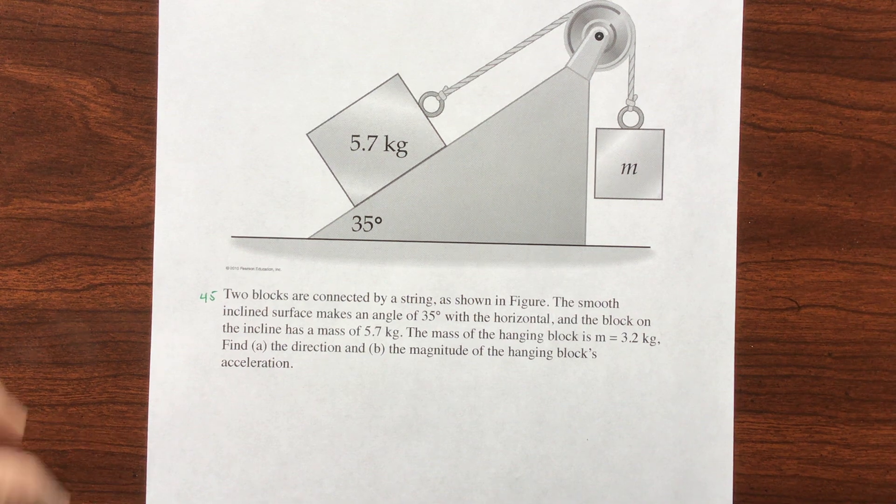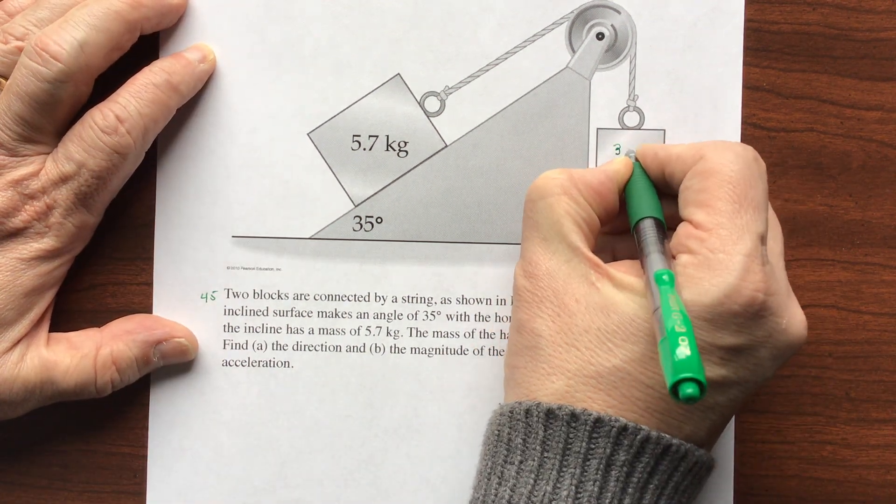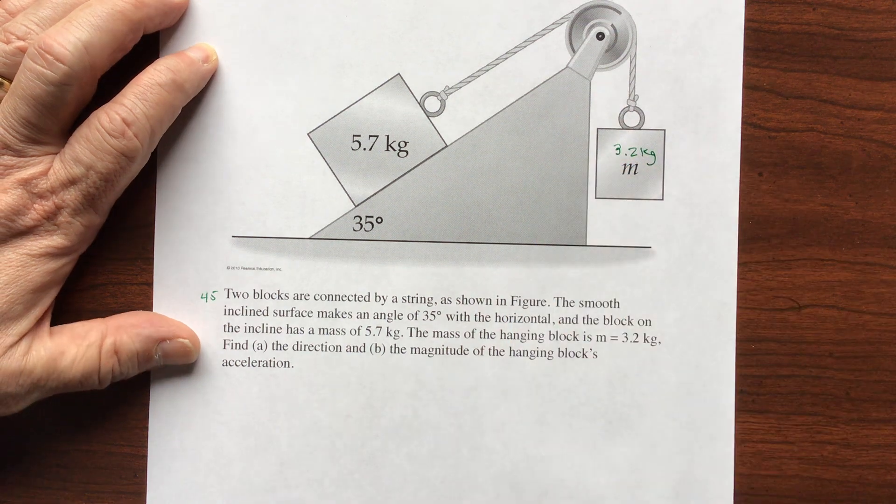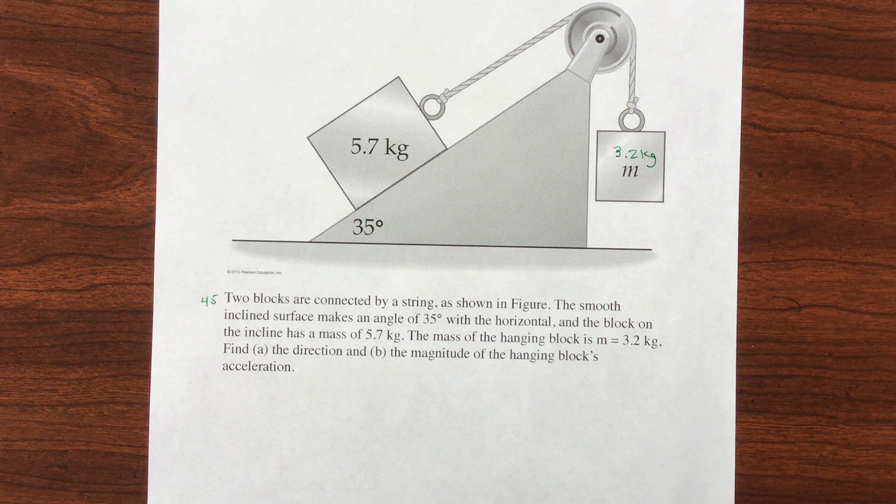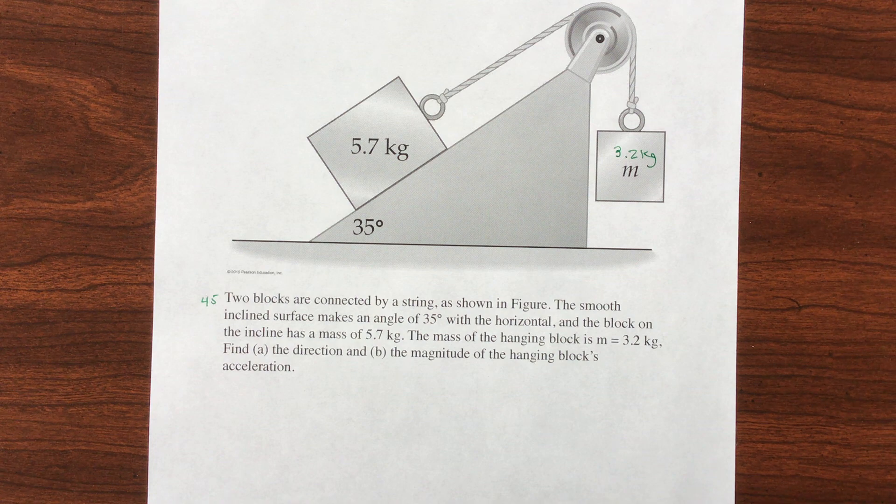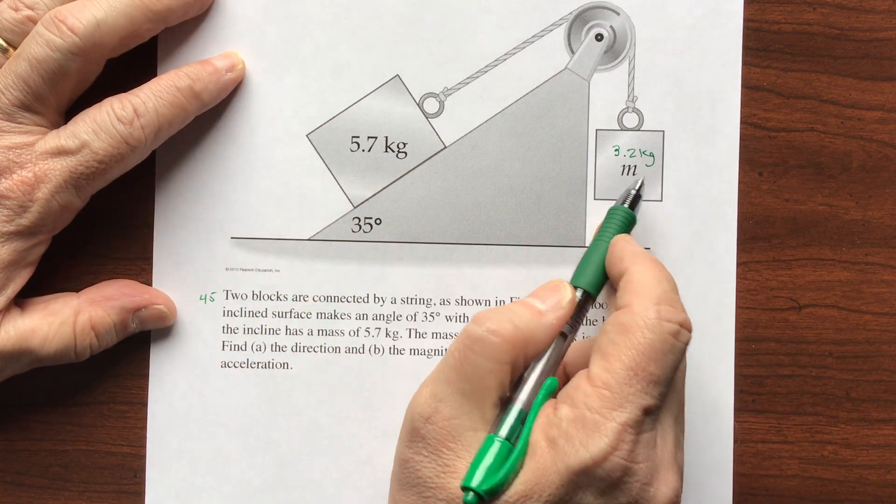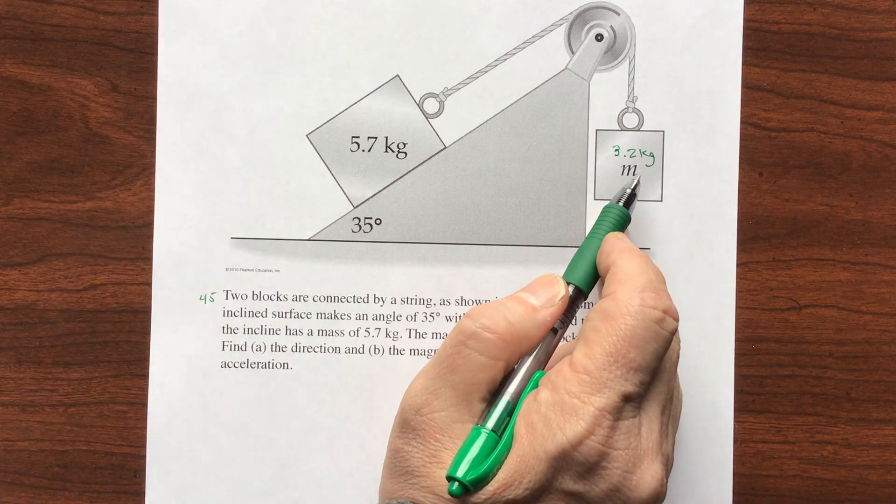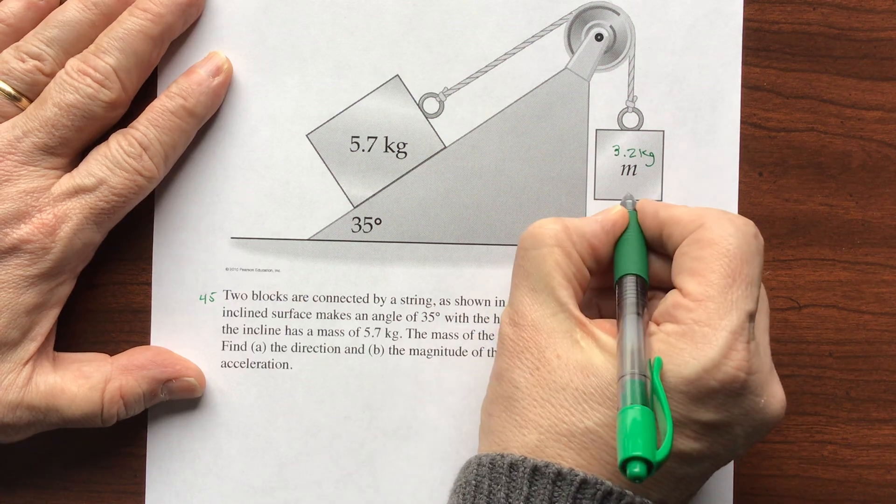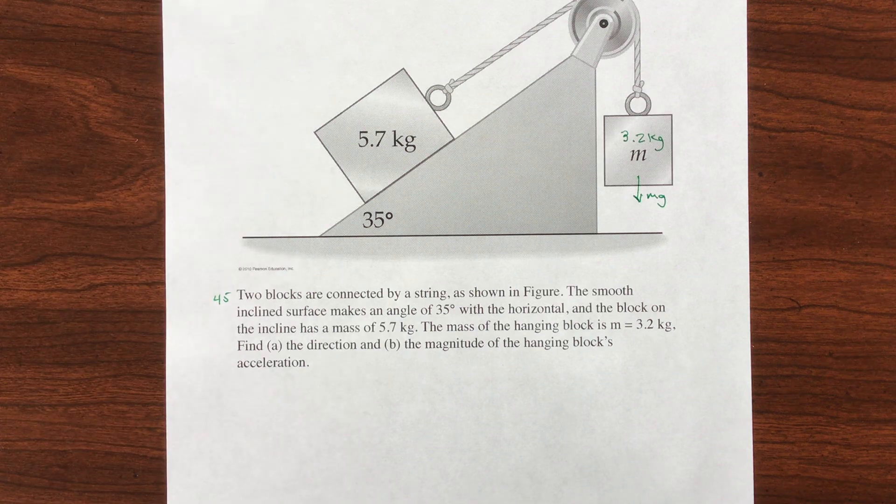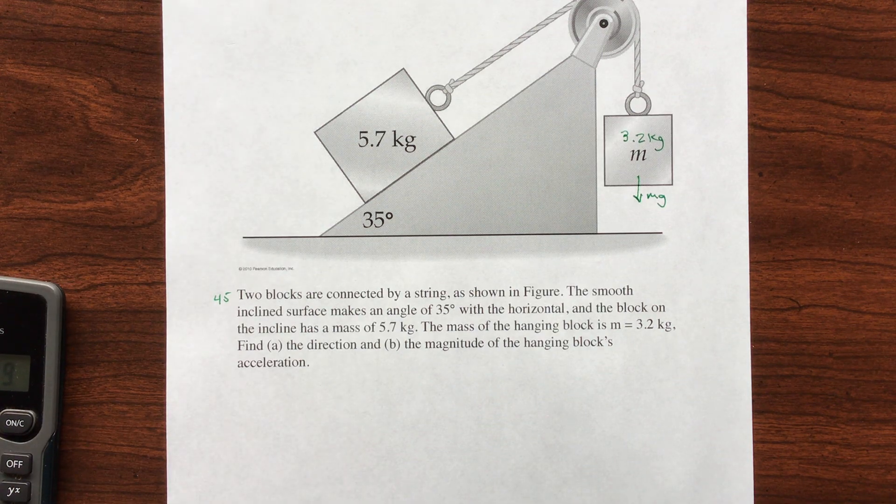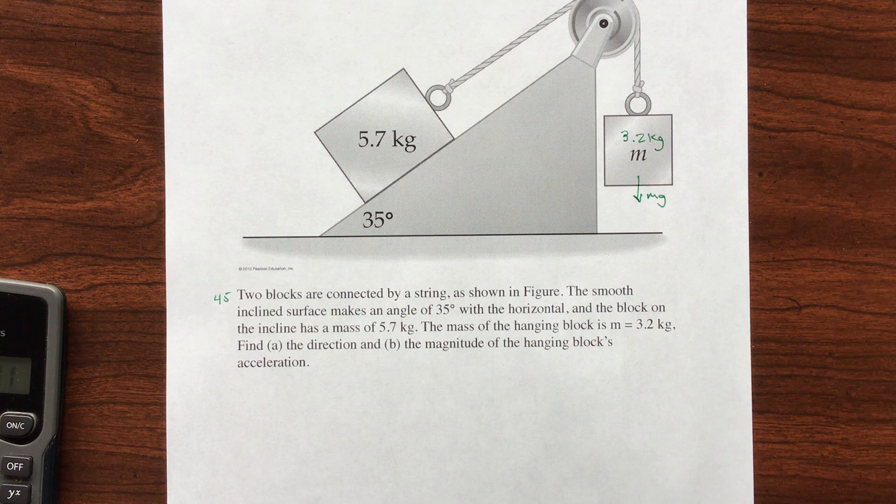So we know what m is, m is 3.2 kilograms. And then we want to know, is that block going up or down, and how fast is it accelerating? All right, so I need to find this. Let's find out what this mass times gravity is. So this is its weight going down. I'm going to multiply that by 9.81, that's gravity, times 3.2.